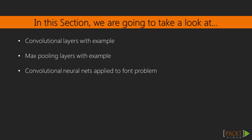First, we're going to explain what a convolutional layer is in a neural net, followed by a TensorFlow example. Then, we'll do the same for what's called a pooling layer. Finally, we'll adapt our font classification model into a convolutional neural net and see how it does.